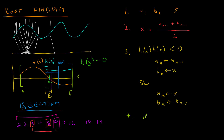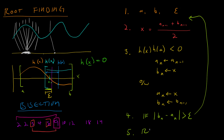Step four: test whether we're within epsilon of the answer. If the difference between our brackets is bigger than epsilon, go back to step two and find a new midpoint. If it's less than epsilon, then the distance from the bracket to the root must also be less than epsilon and we're done. Step five: return one of the brackets — it doesn't really matter which one. That's bisection method, and now we're going to the code section.